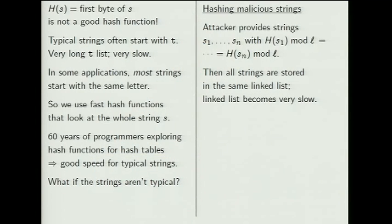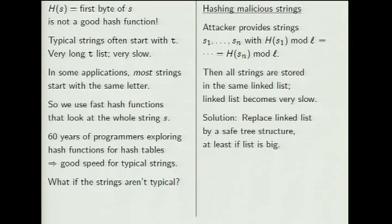Let's look at hashing malicious strings — exactly what Solar Designer was talking about, where the attacker chooses strings which all have the same hash value. If all N strings going into the hash table have the same hash value, say hash 0 modulo L, they all go into linked list number 0. The hash table does no good spreading things out, putting everything into one linked list, and the lookup time becomes N squared.